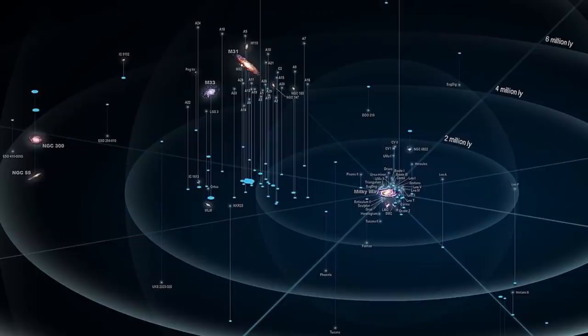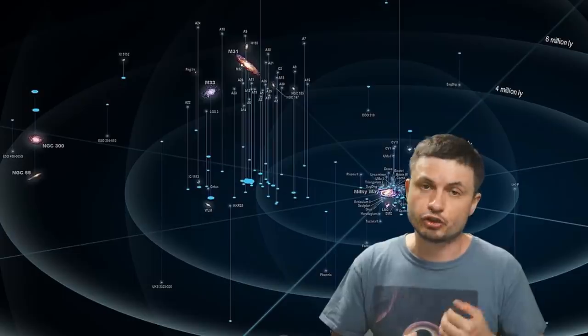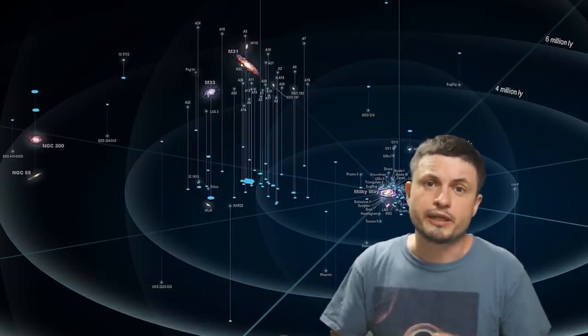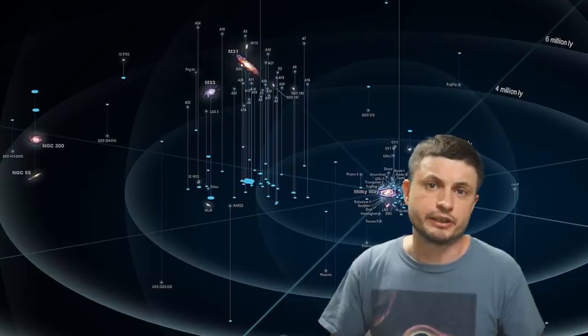And so once we leave our own galaxy the Milky Way, we'll find ourselves looking at a distance of about 10 million light years. And this is what we usually refer to as the local group of nearest galaxies. This is where galaxies like the Andromeda are, obviously the Milky Way and all of its neighbors, and some of the other less known galaxies such as the Triangulum.